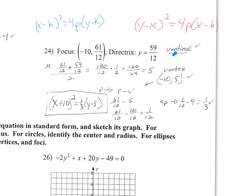We know it's vertical and positive, so using (x − h)² = 4p(y − k): h is −10, so (x + 10)² = (1/3)(y − k). k is positive 5, so the equation is (x + 10)² = (1/3)(y − 5). That is the equation from this information.